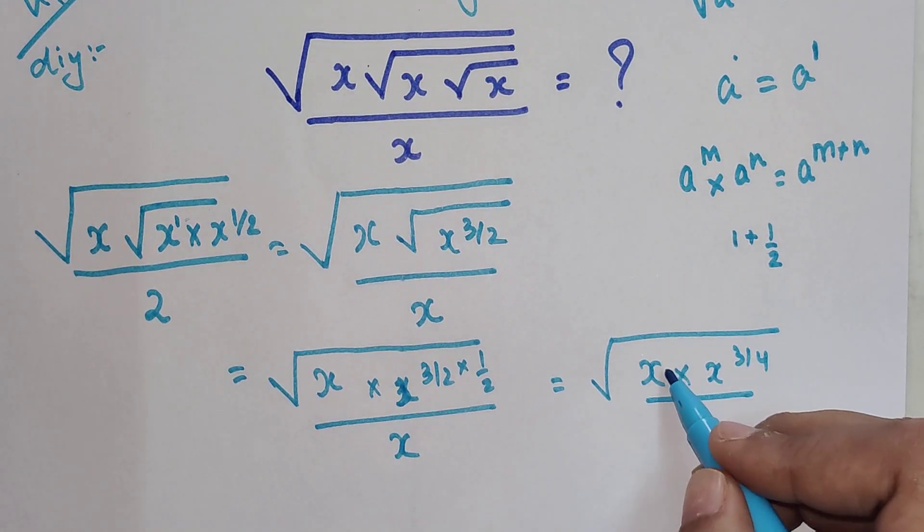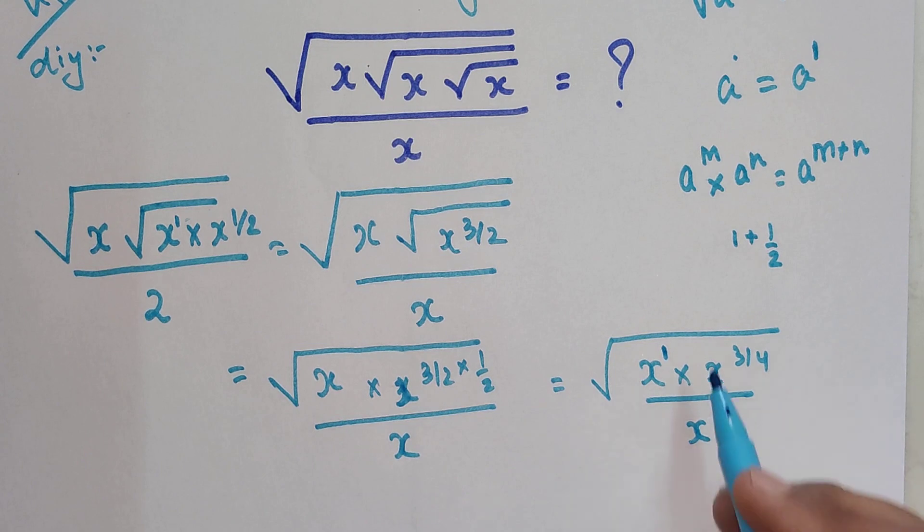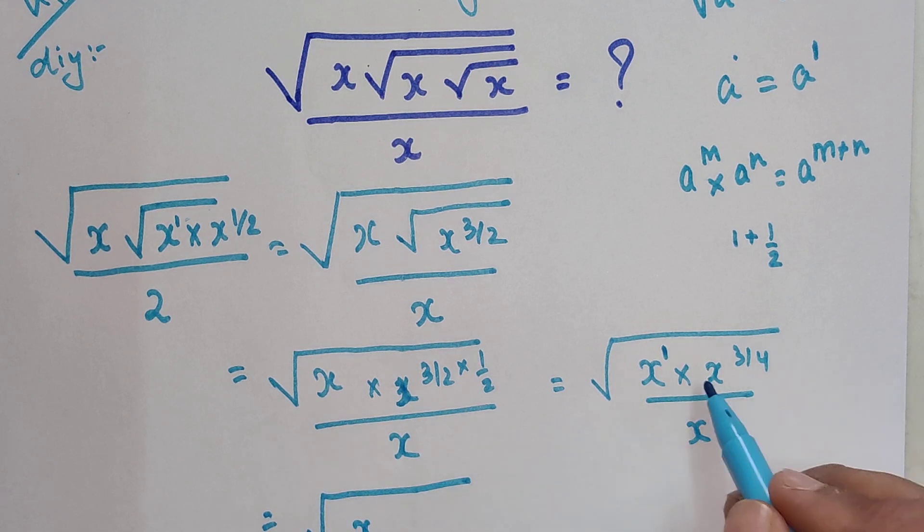So now please understand, this is still x raised to 1. So all you have to do is just add all of them. So now this gets you root of 1 plus 3 by 4, which gets you 7 by 4 upon x.